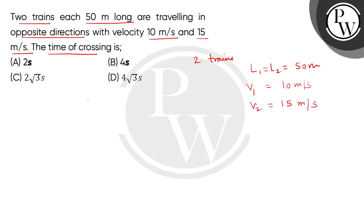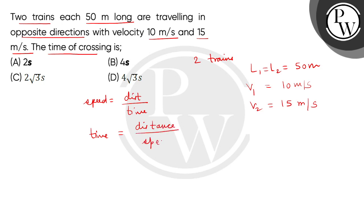When we take the simple formula that speed is equal to distance divided by time, we find time equals distance divided by speed. When we consider these two trains, we get time is equal to total length for the crossing, which will be equal to the sum of both trains.